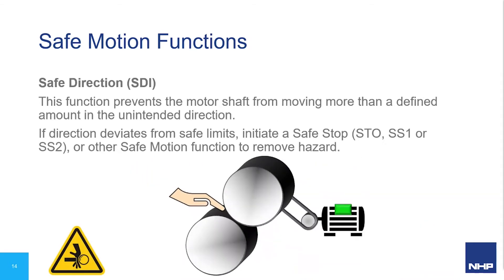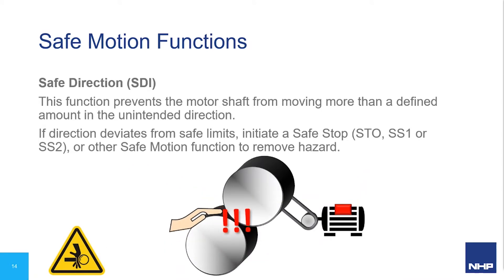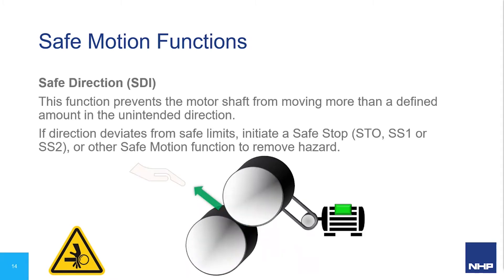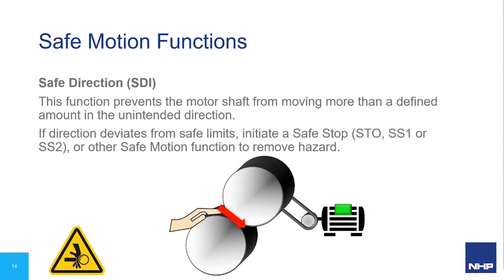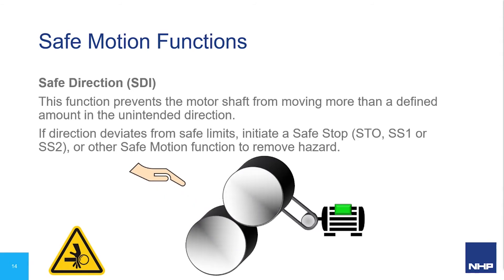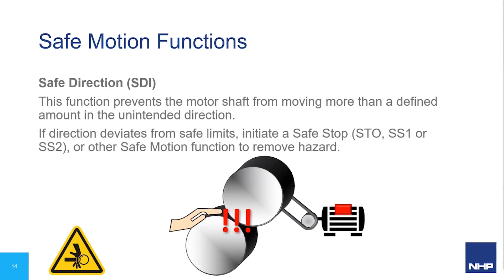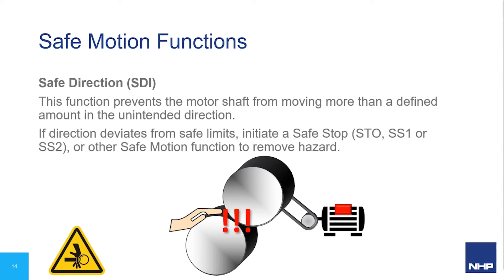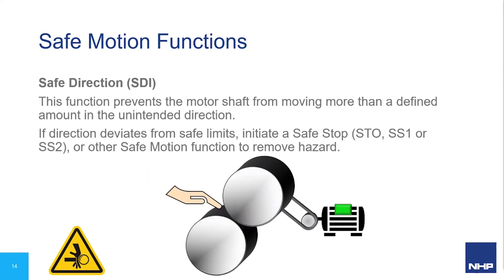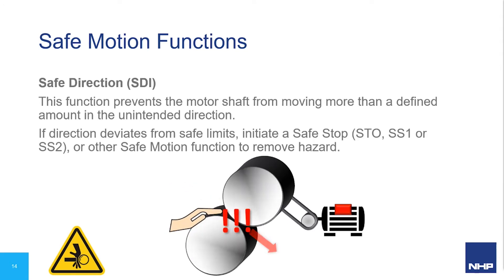The direction of the load may also be monitored for safe operation — this is called the Safe Direction function, or SDI, which monitors the load to ensure it's not moving in an invalid or otherwise unsafe direction. SDI is used in applications where certain hazards only exist whilst the machine is moving in an unsafe direction. For example, a person could be drawn into a machine between two rollers, but only if the rollers are moving in a particular direction. SDI is frequently used in combination with SLS, where the operator requires access to the machine to perform a task.